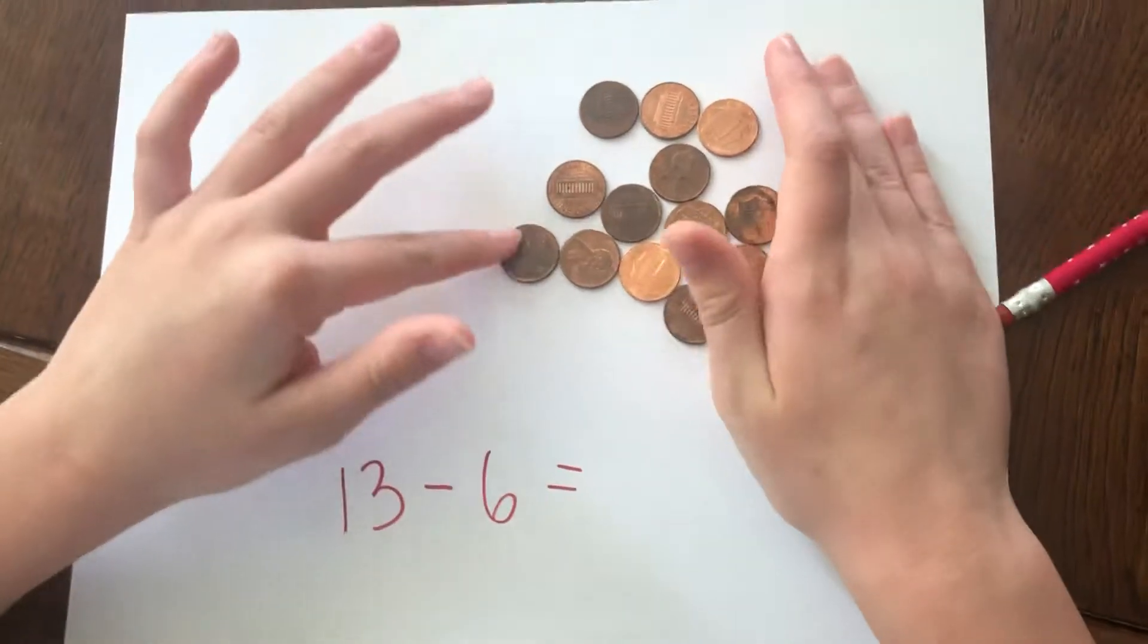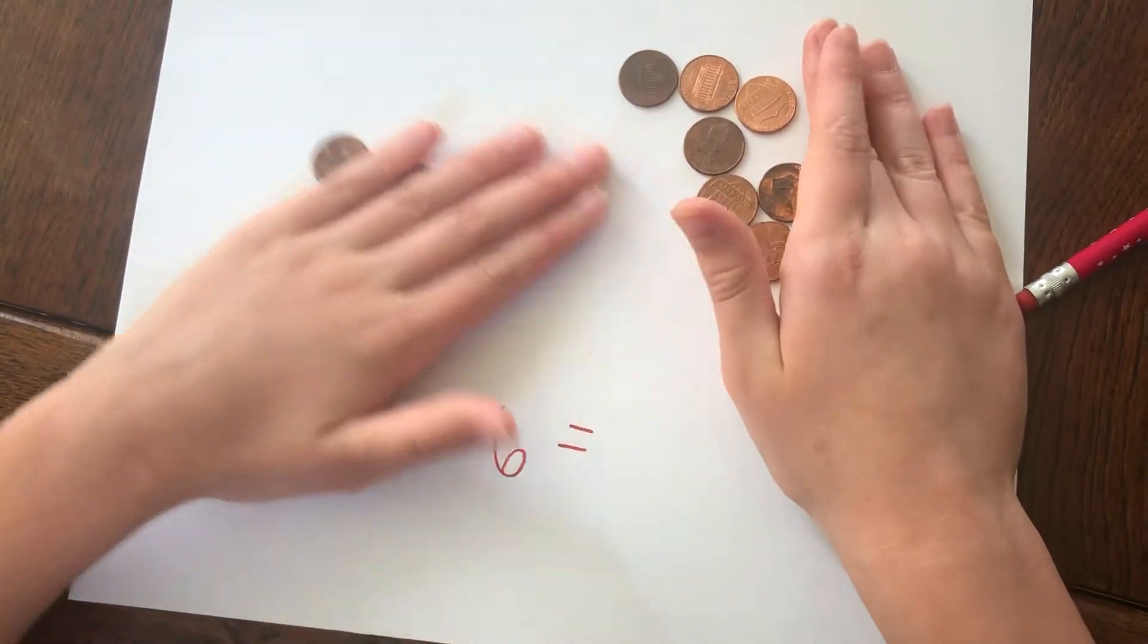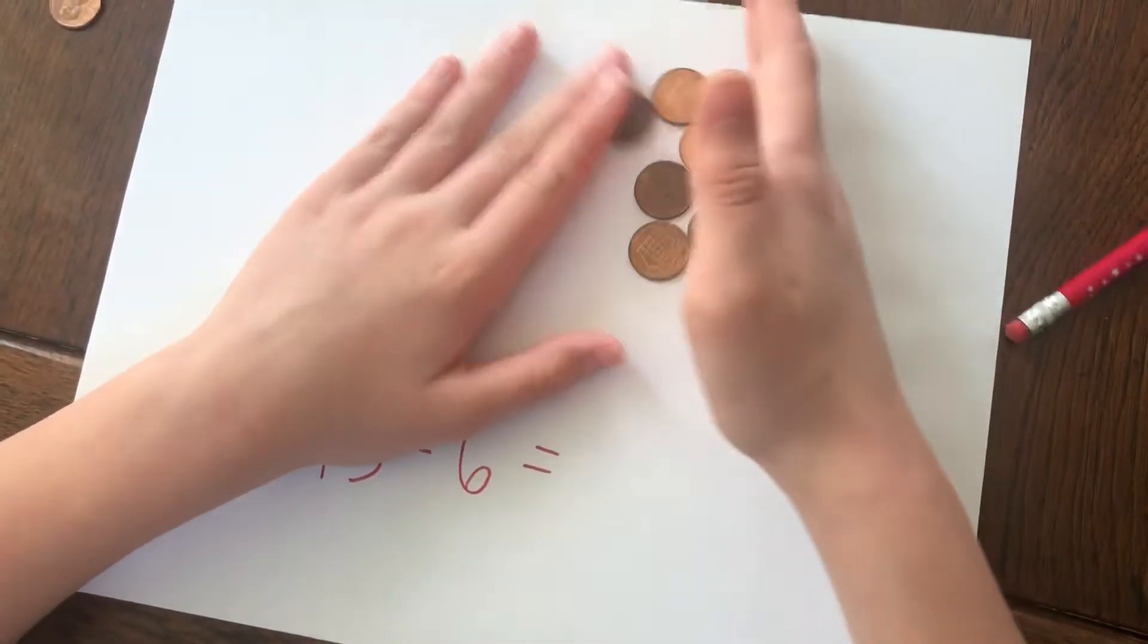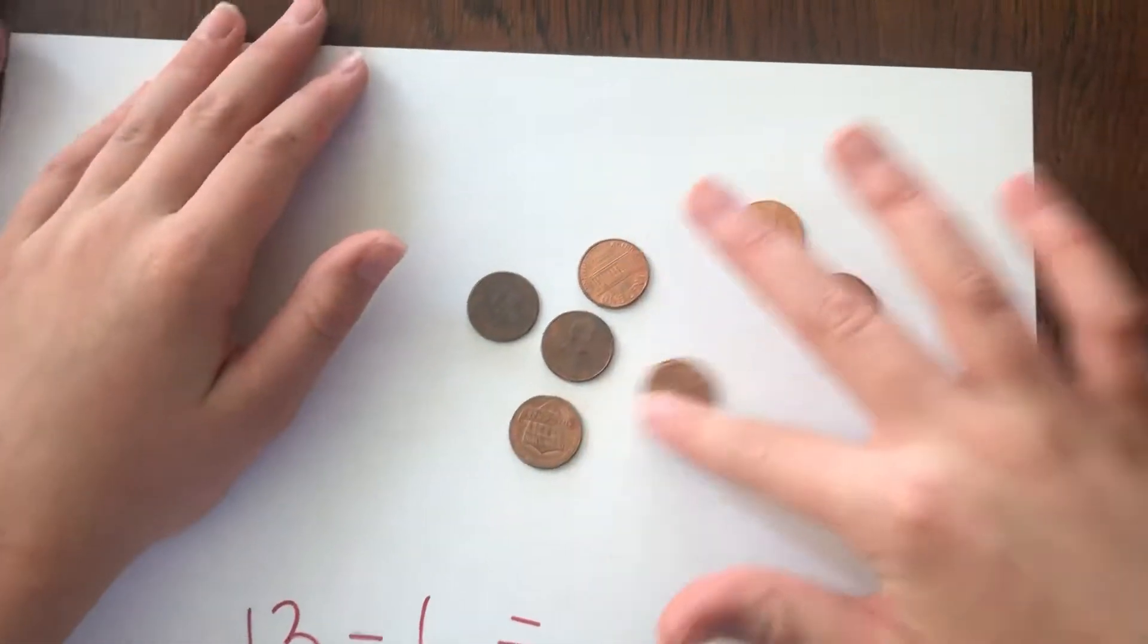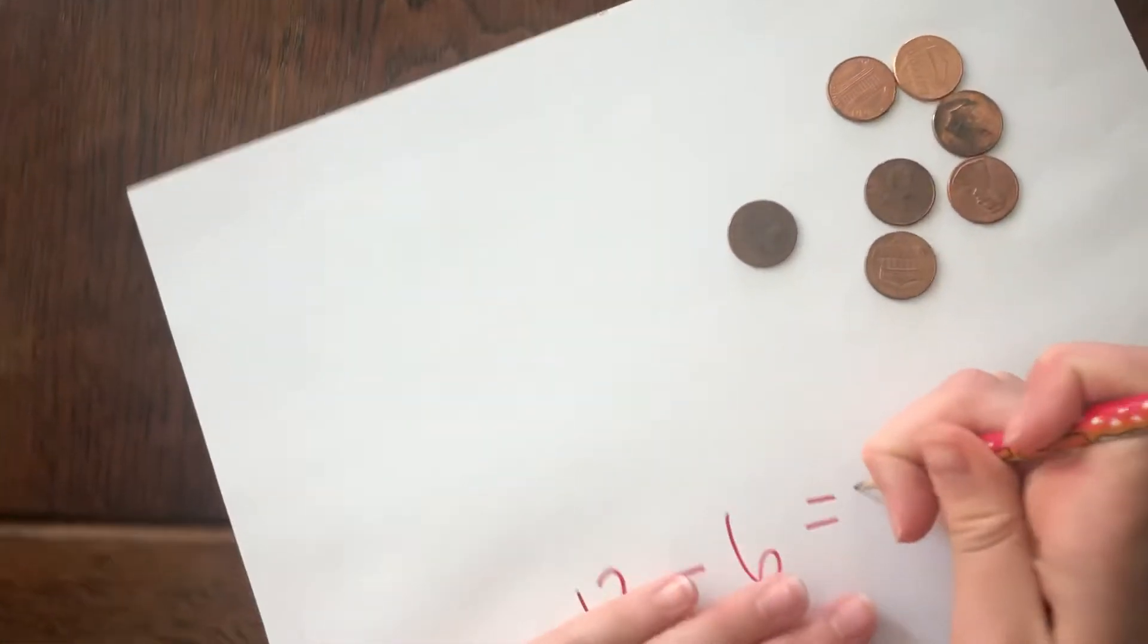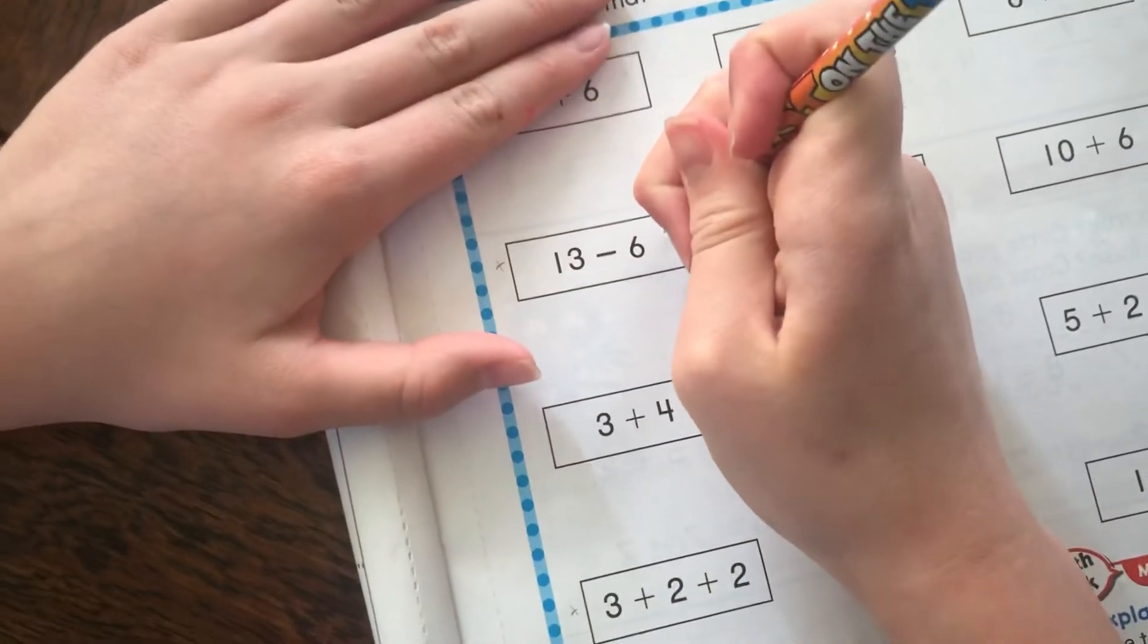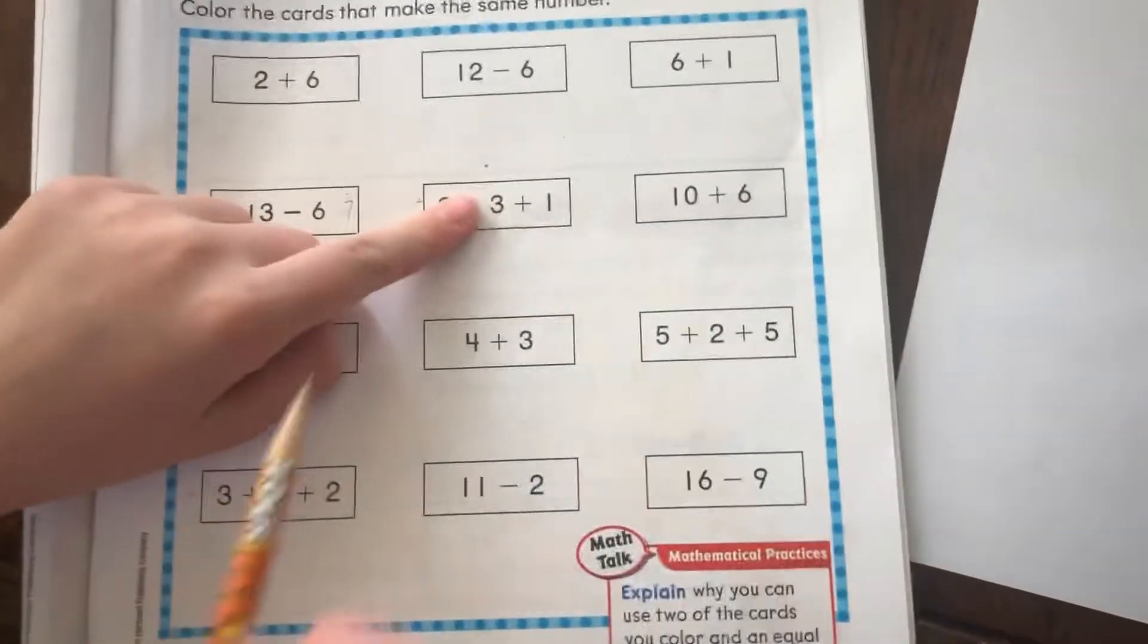So let's take away 1, 2, 3, 4, 5, 6. Okay, let's move these to the side. Now we're looking at these right here and if we count them we have 1, 2, 3, 4, 5, 6, 7 left over. So it's 7. So over here I would write 7.